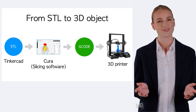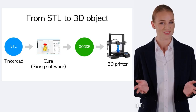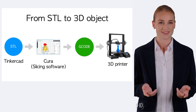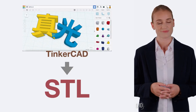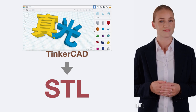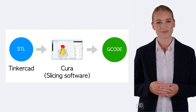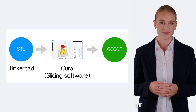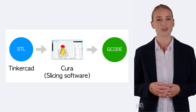Today's topic is about a key step in our 3D printing journey: converting an STL file from Tinkercad into G-code through a slicing software. STL files are 3D models we've crafted in Tinkercad. To translate this into a language our 3D printer understands, we use a slicing software like Cura.